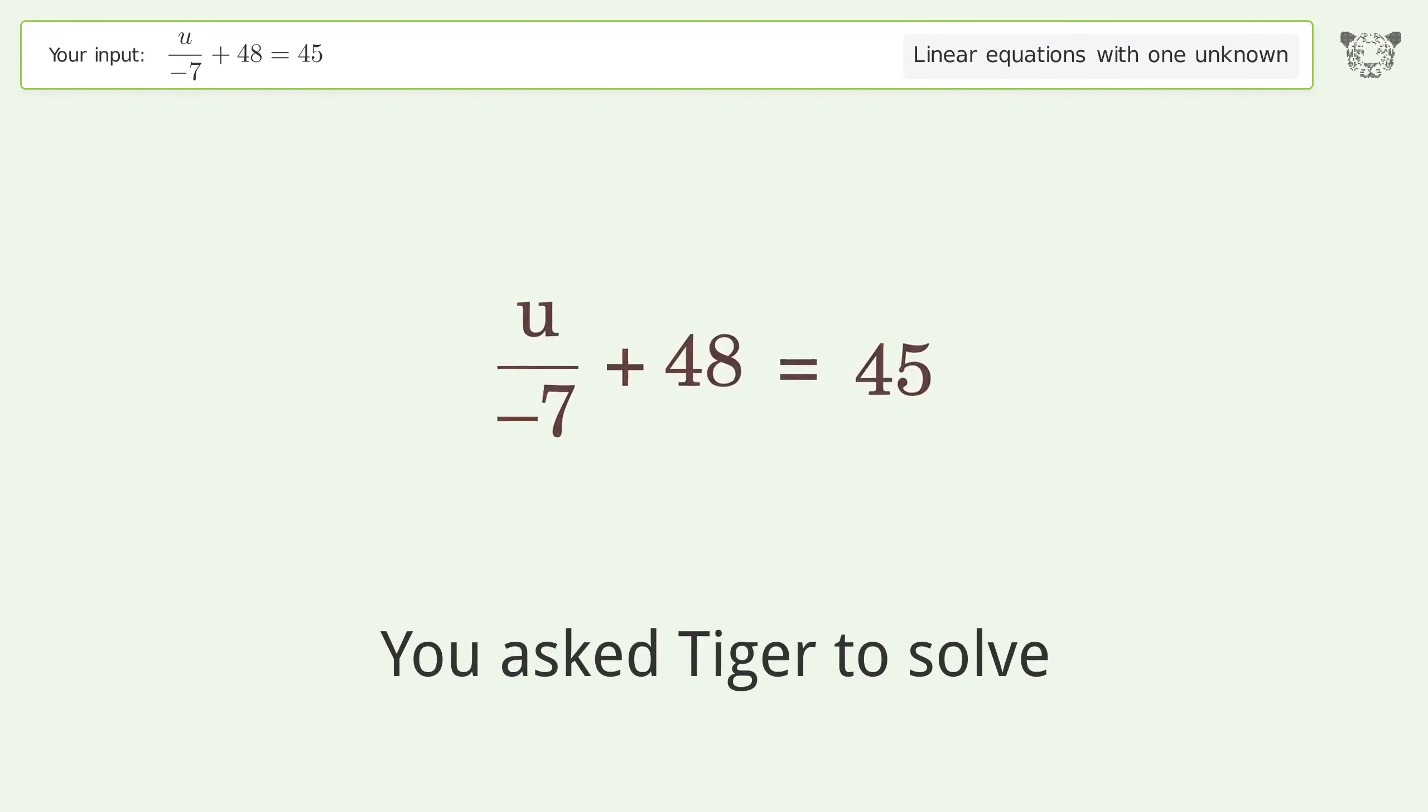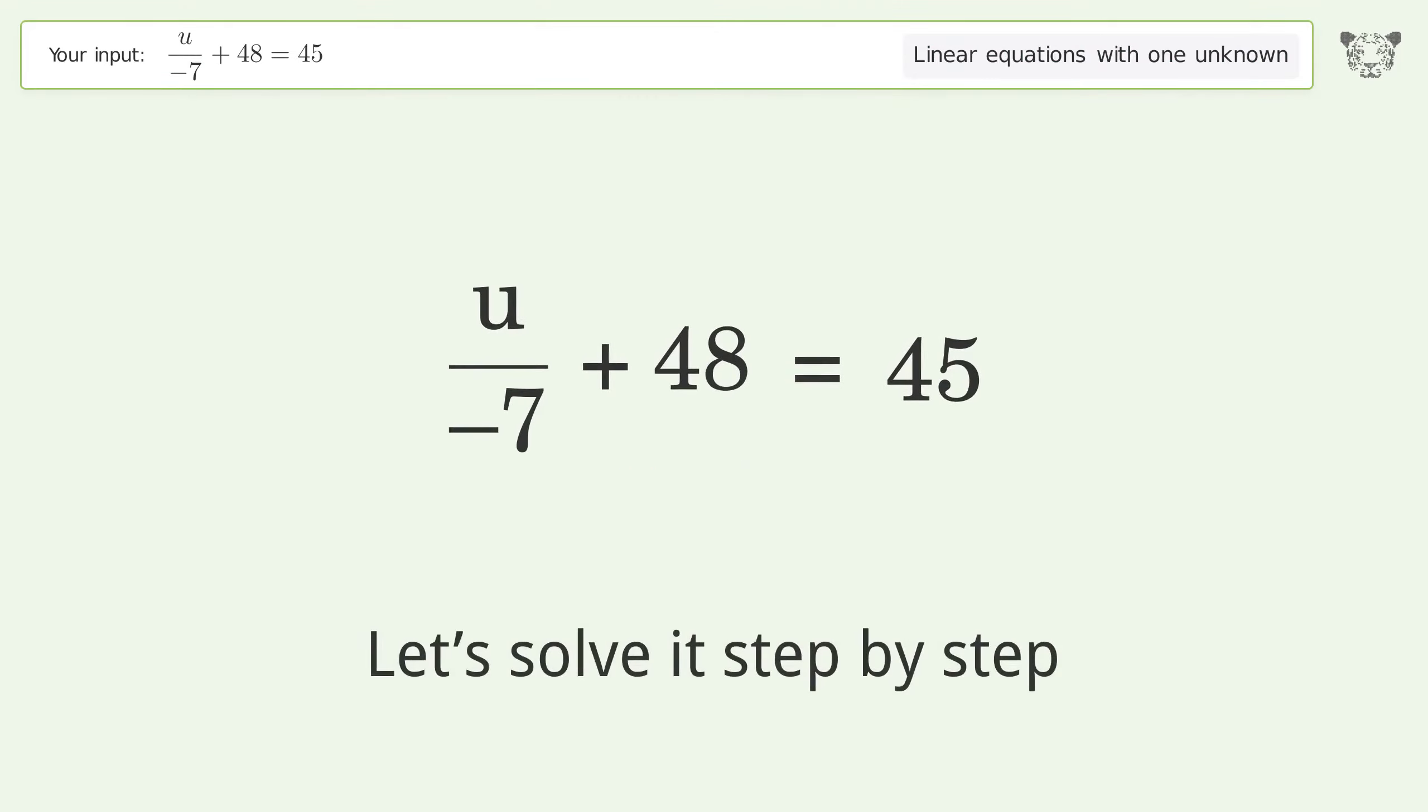U asked TIGER to solve. This deals with linear equations with one unknown. The final result is U equals 21. Let's solve it step by step.